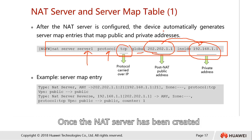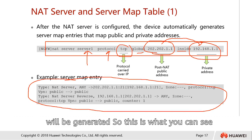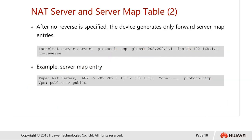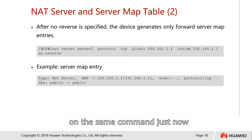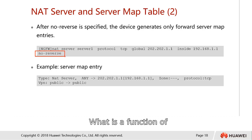Once the NAT server has been created, our NAT server entry will be generated automatically. Apart from that, on the same command, we can also add the 'no reverse' option. What is the function of this 'no reverse' command?